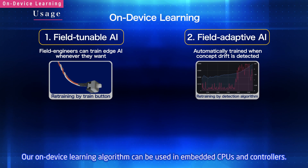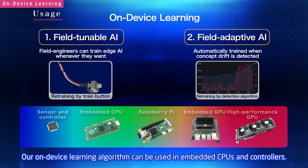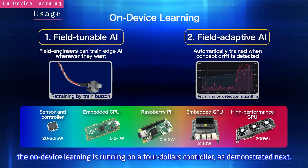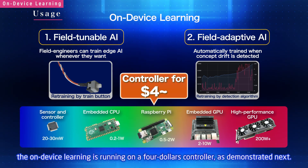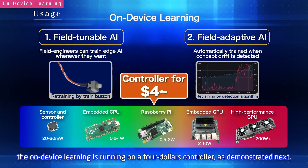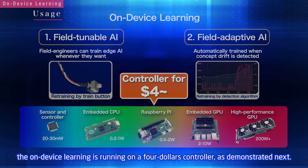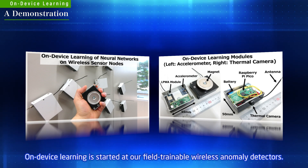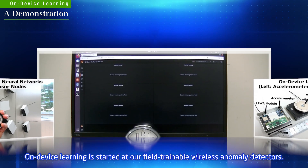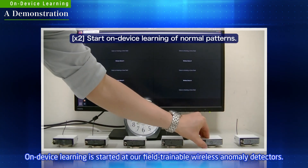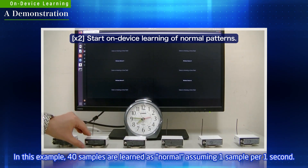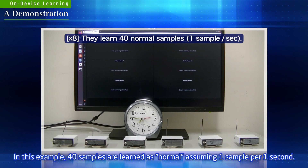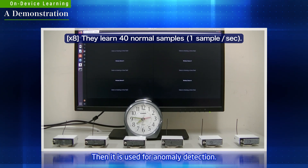Our on-device learning algorithm can run on embedded CPUs and controllers — for example, on a $4 controller as demonstrated next. On-device learning is started at our field-trainable wireless anomaly detectors. In this example, 40 samples are learned as normal, assuming one sample per second, and then it is used for anomaly detection.